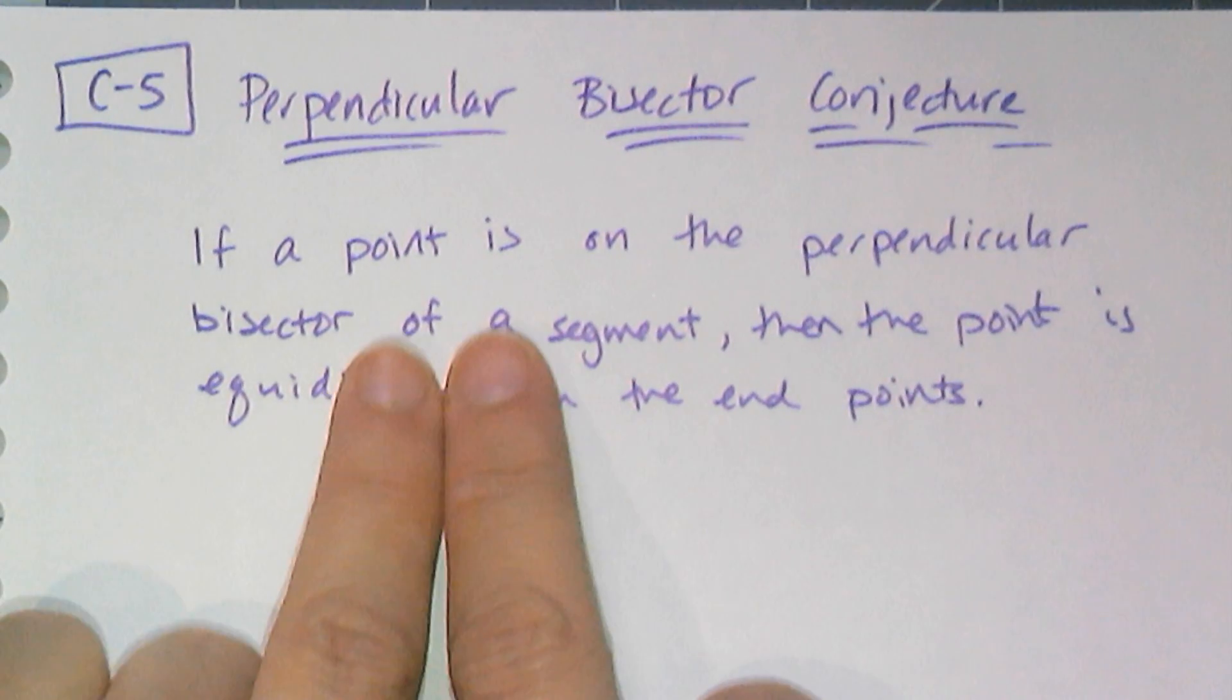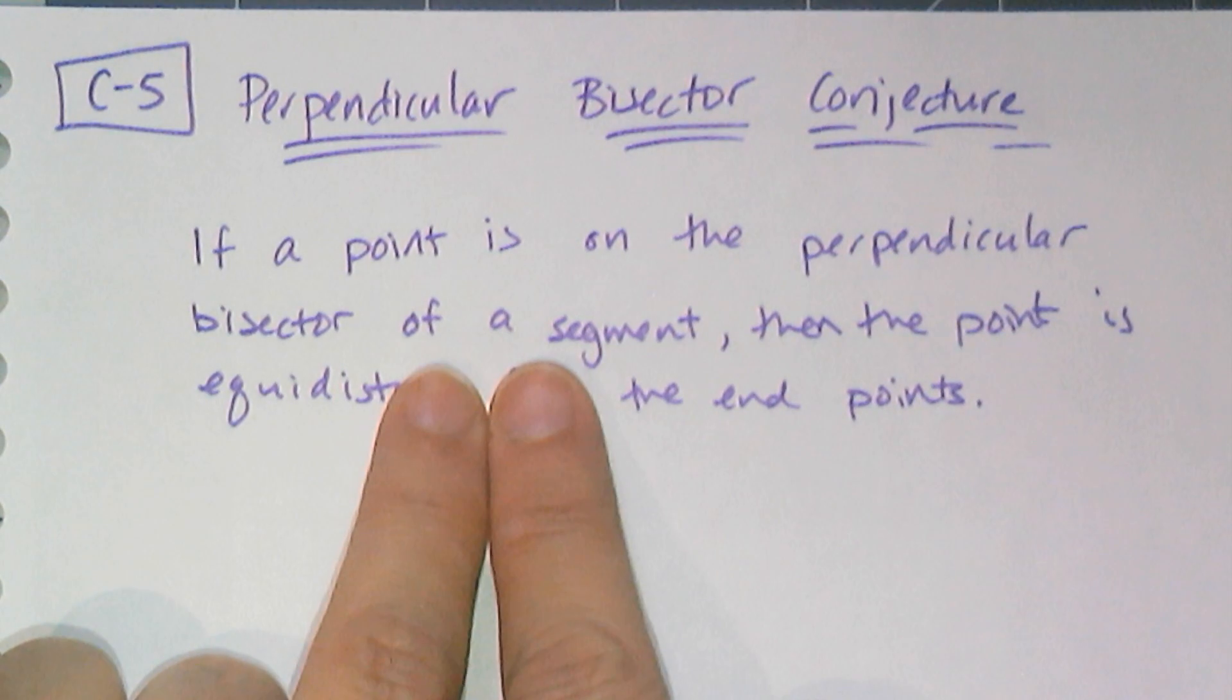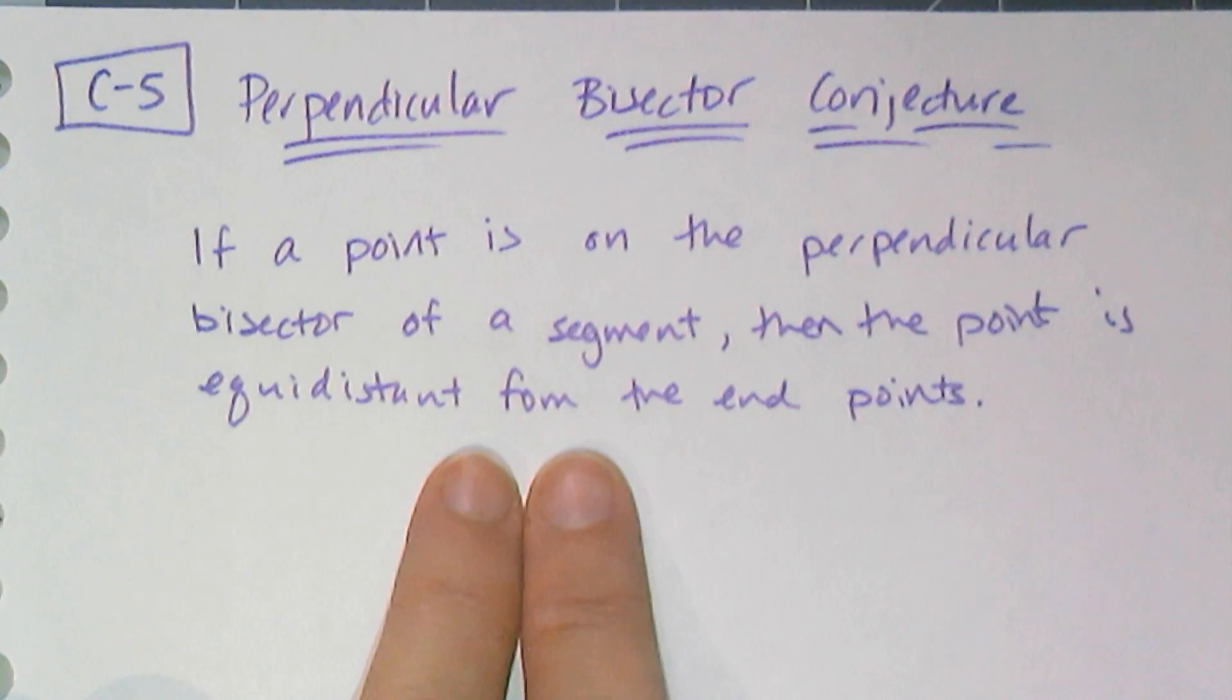It is called the perpendicular bisector conjecture. It says if a point is on the perpendicular bisector of a segment, then the point is equidistant from the endpoints, and we just showed that.